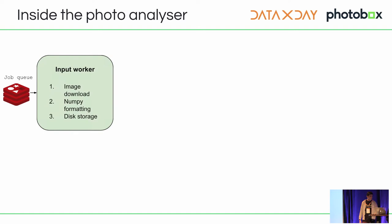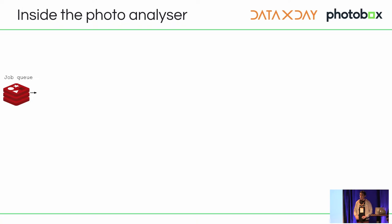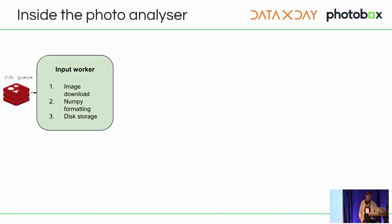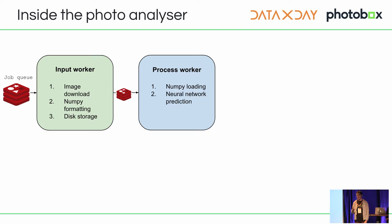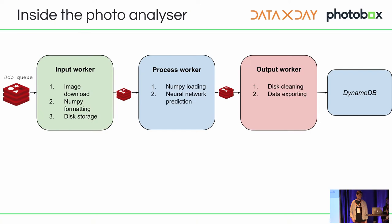Inside the photo analyzer, we have a common job queue where we put all the IDs of photos to analyze. Each job goes through different processing blocks for specific tasks. The first block retrieves the image from the upload servers, downloads it, formats it into NumPy — a library to load images into a numeric format — and stores it on disk. Then the process worker loads the image and calculates the machine learning results using neural networks. Once the result is ready, it is sent to the output worker which posts it to DynamoDB, along with some disk cleaning.